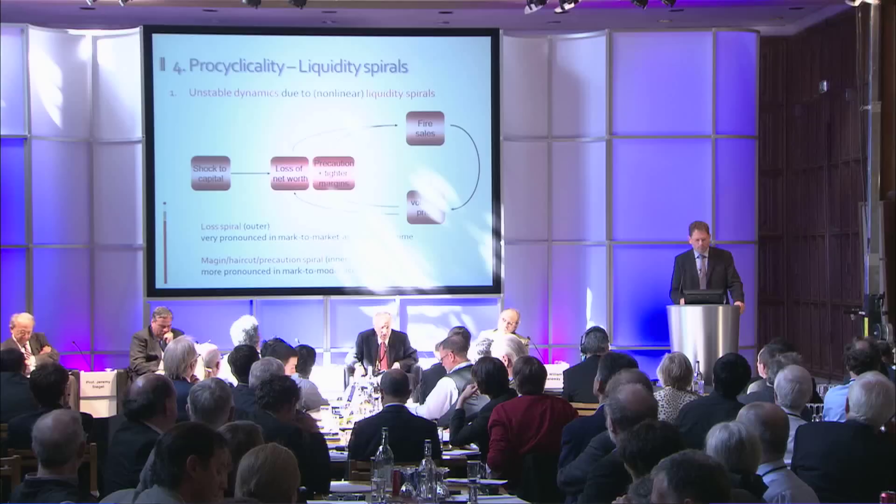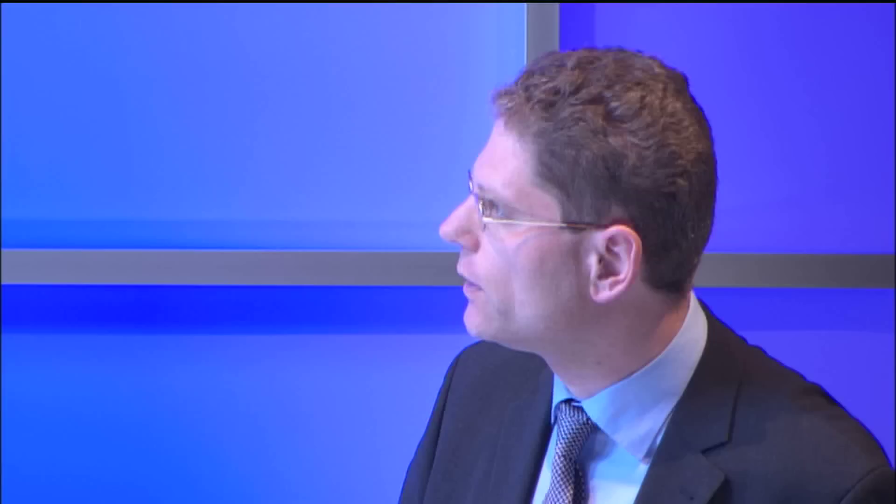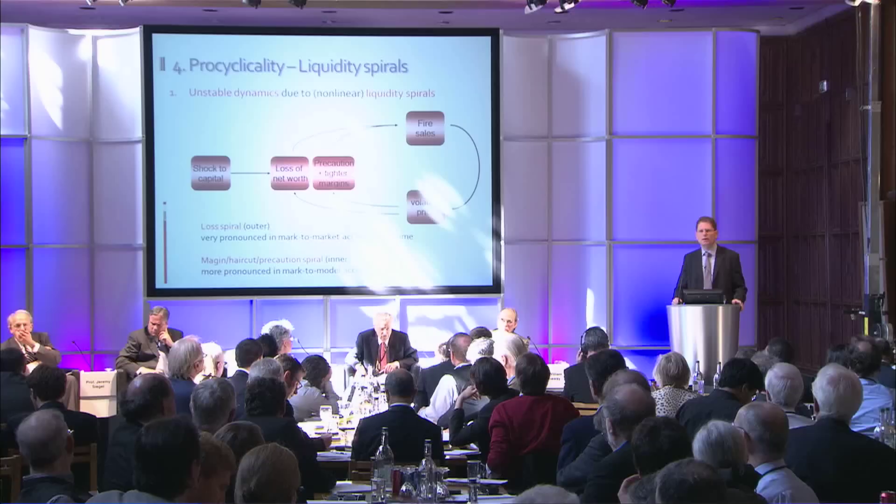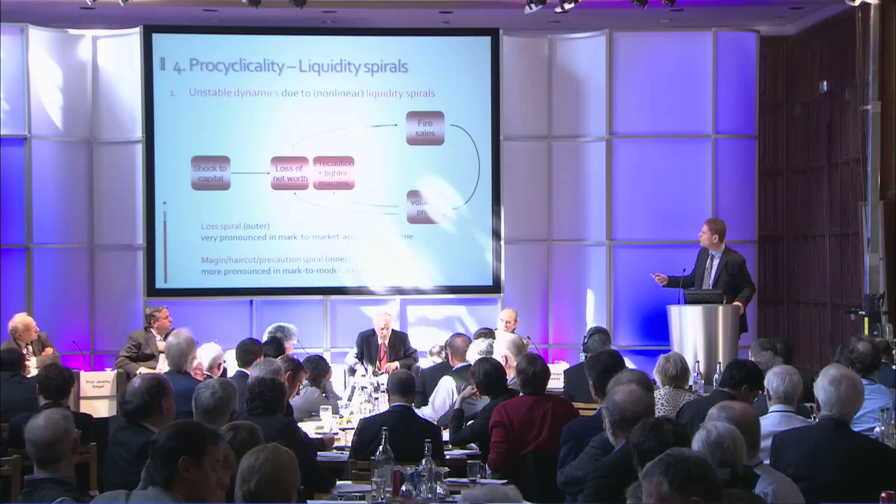Why is this credit bubble particularly worrisome? It's because of the pro-cyclicality due to liquidity spirals. When there's a shock on capital, you have a loss on net worth — especially for the highly leveraged — and they have to fire-sell. The price drops and the loss is exacerbated in a loss spiral, especially pronounced under mark-to-market accounting, because you see losses and are forced to sell more and more. On top of this loss spiral, you have spirals driven by volatility: fire sales shoot up volatility, which shoots up margins and haircuts — the margin-haircut spiral — so you have to de-lever further, causing more fire sales and more volatility.